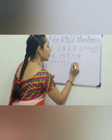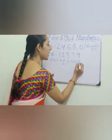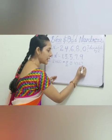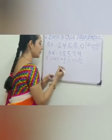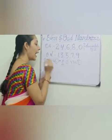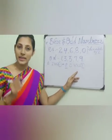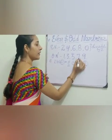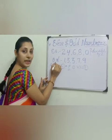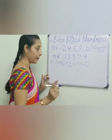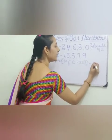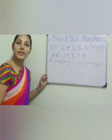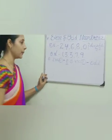One more example. The number is 4, 3, 2, 7. We have to look at the ones place to see whether it is odd or even. The ones place digit is 7. Where is the 7? Here. And what are these numbers called? Odd numbers. So it is an odd number.